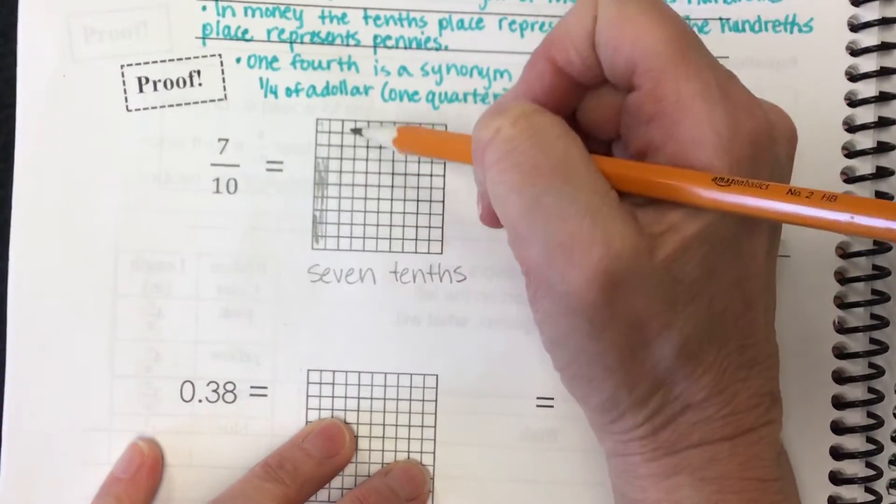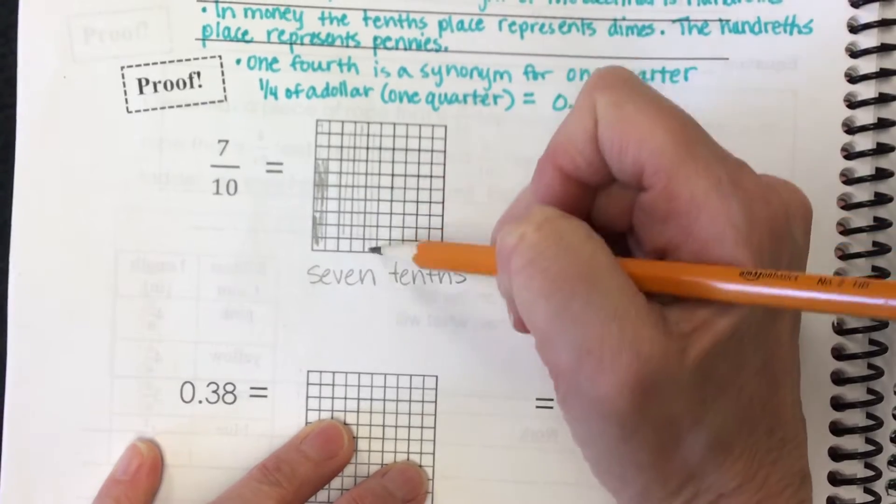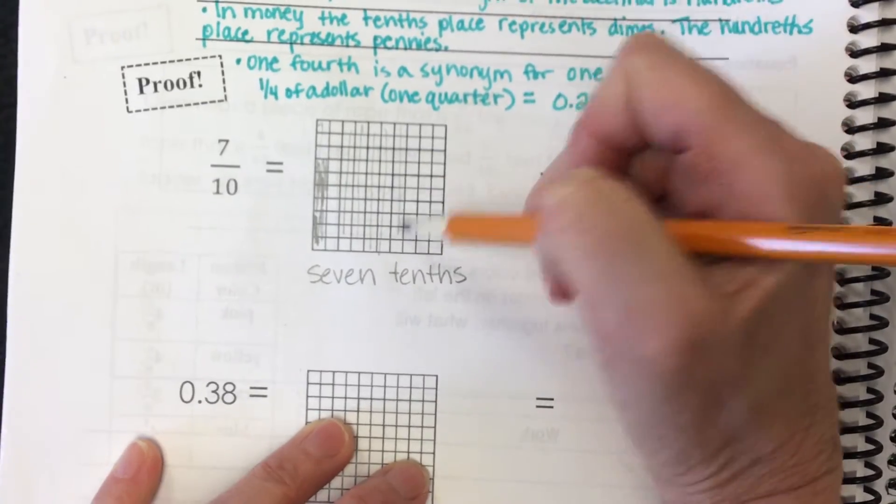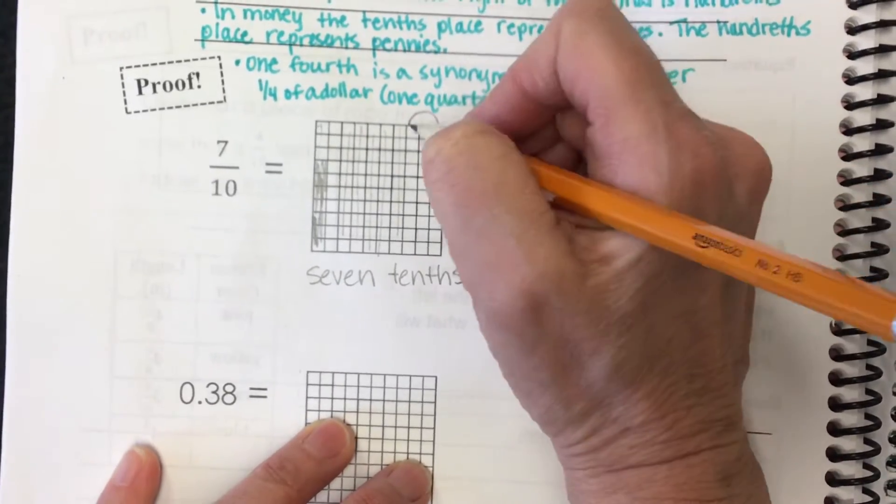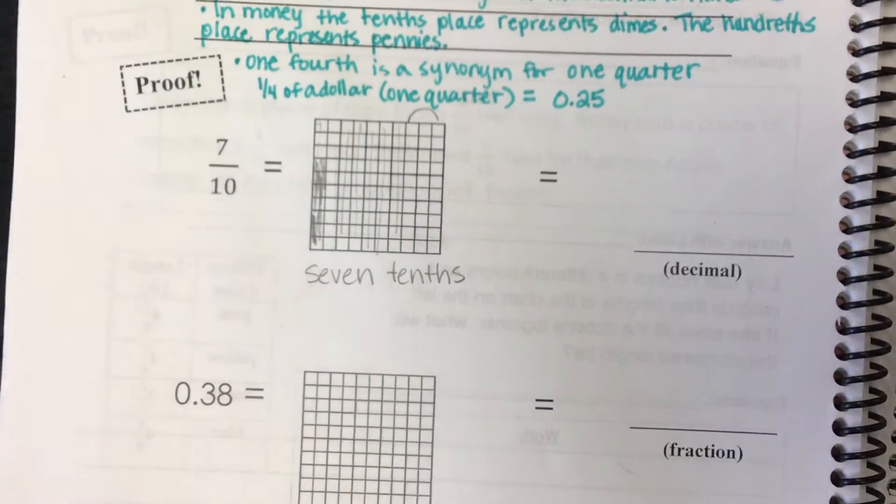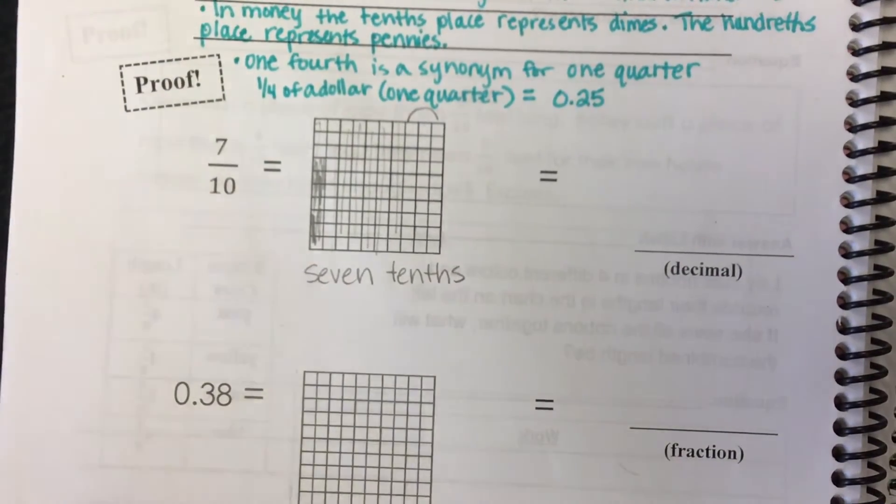1, 2, 3, 4, 5, 6, 7. And then there are 8, 9, 10 columns. So the columns give you your tenths.